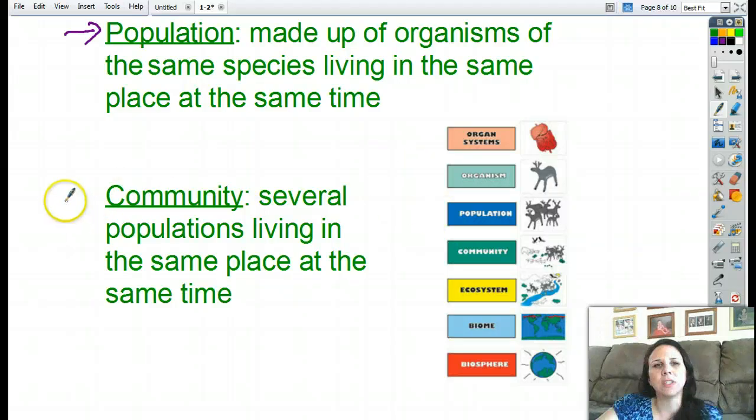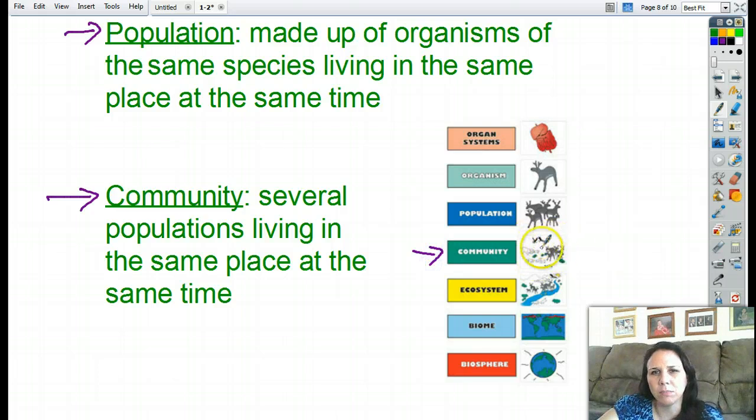Now, if I put those populations together with other species, so the seagulls are fighting with the crows to eat the food. Well, now we have a community because we've got lots of different living things living in the same place at the same time. So we've got a community right there. It's hard to see, but there's like vultures and moose and plants. So all the living different types of species, whereas population is just the same kind of creature. Communities has all the different types of creatures.